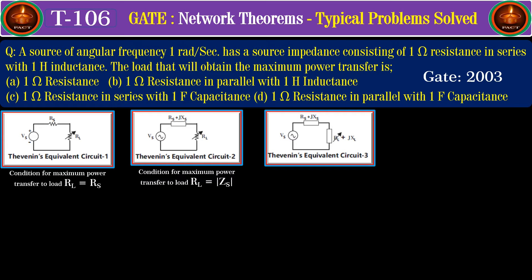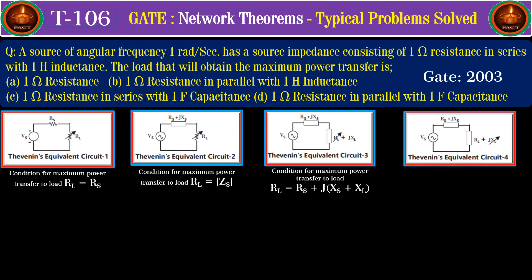When the source is AC, source impedance is complex, and the load impedance is also complex but only the resistance part of the load is varying, then the maximum power is transferred when RL equals the magnitude of ZS. Similarly, when only the reactance part of the load is varying, then maximum power is transferred when XL equals minus XS.